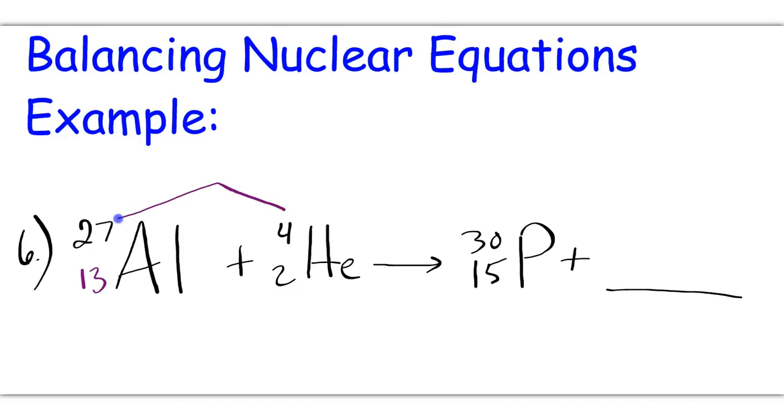Now, 27 plus 4 is going to equal 31. That means that the masses of phosphorus and whatever this is must also equal 31. So 30 plus 1 is going to give me my 31. Now, at the bottom, 13 plus 2 is going to equal 15. So the mass here and here have to also equal 15. That's going to be a 0. 15 plus 0 equals 15.